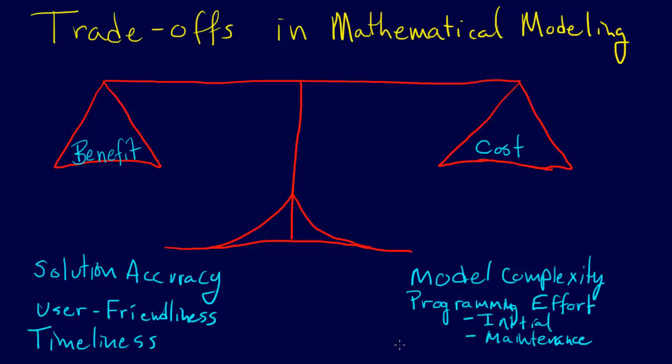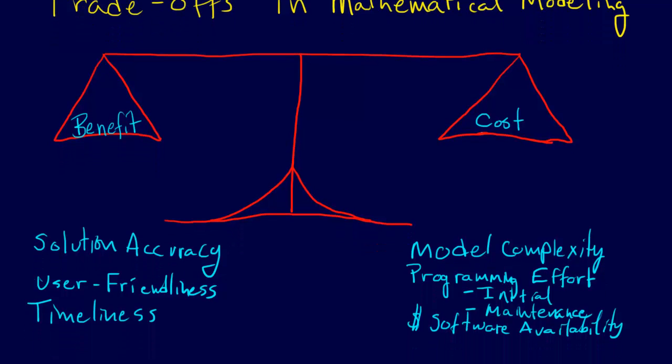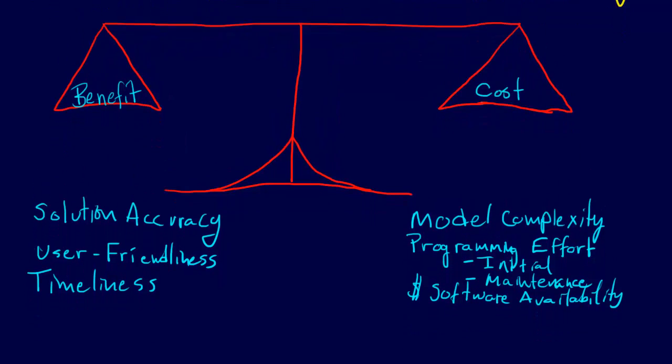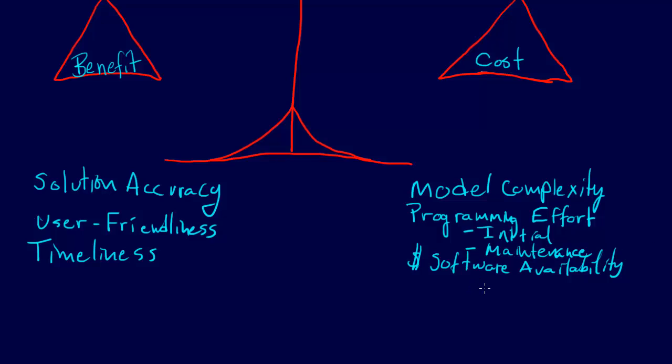And in terms of timeliness, there are several costs that may incur. Another one I can think of offhand is the software cost. So that has to do with the software availability. And we're running out of room here, so we're just going to scroll down a little bit. We'll lose a little bit of the heading, but we realize we're doing cost benefit analysis of the tradeoffs in mathematical modeling.